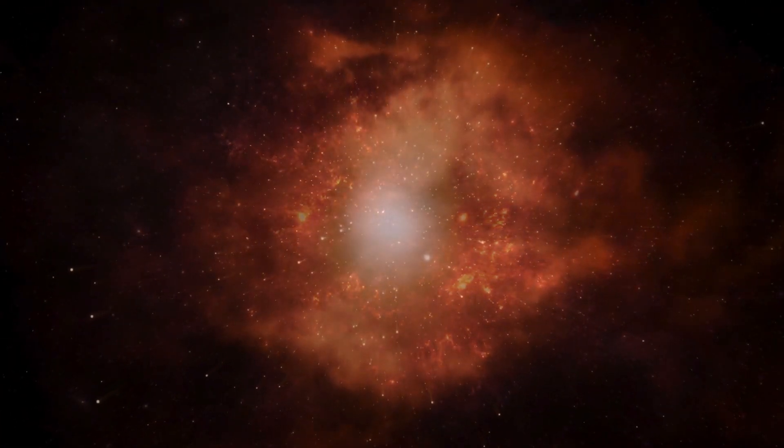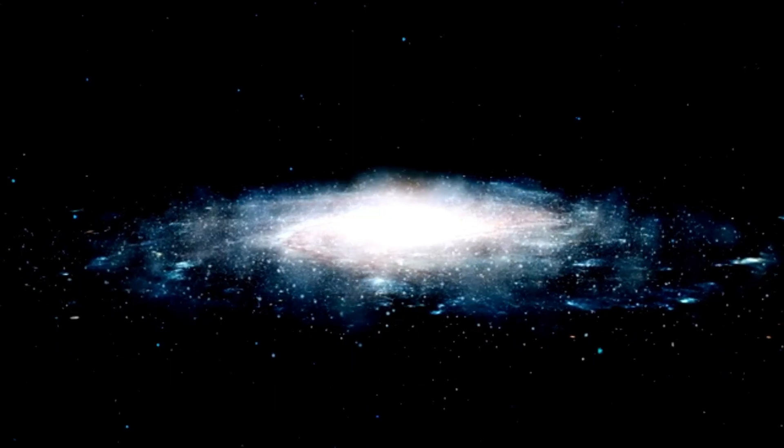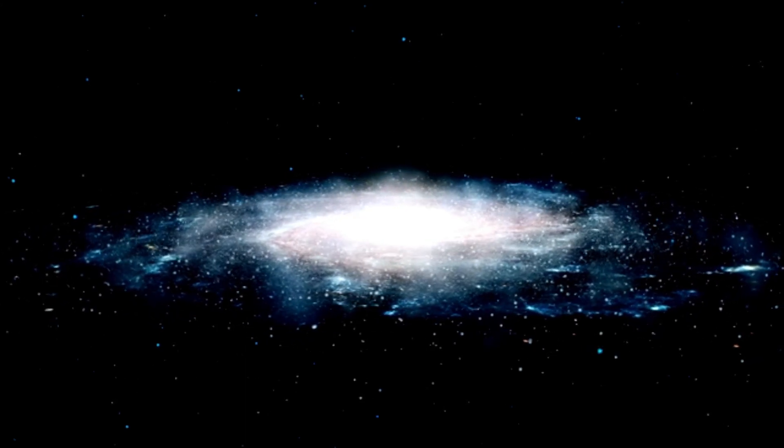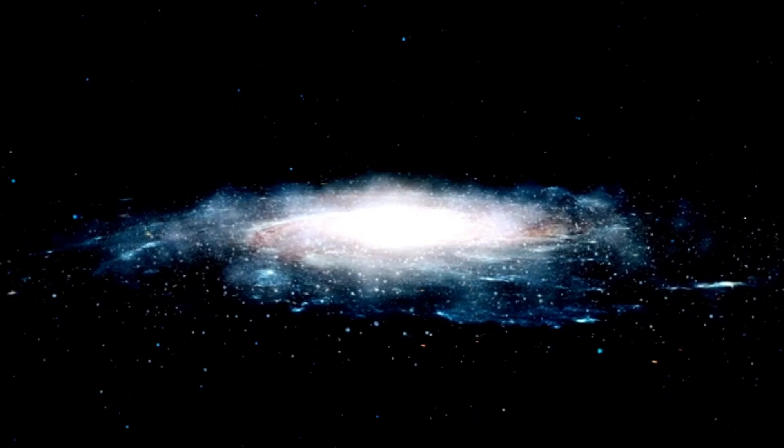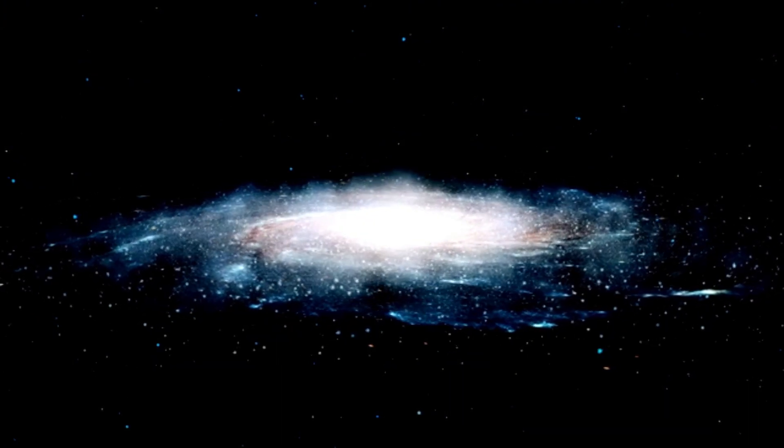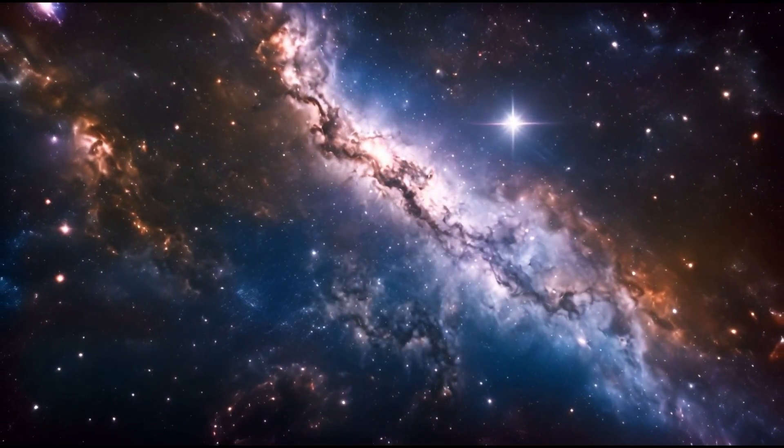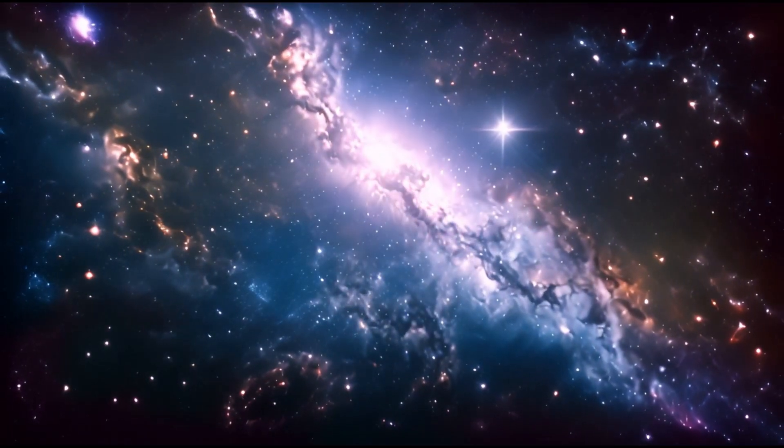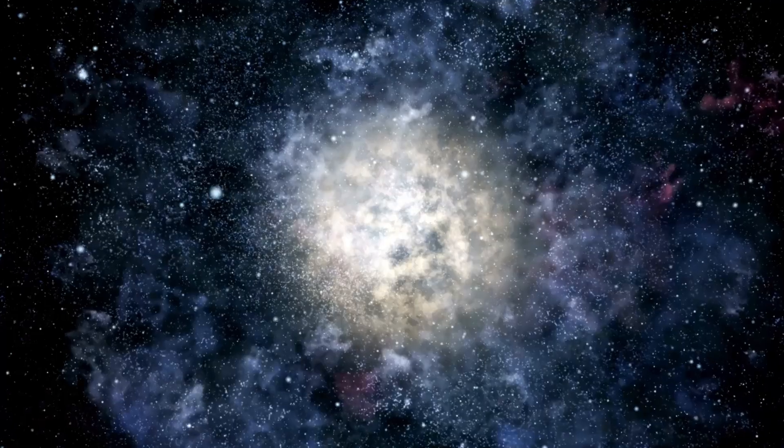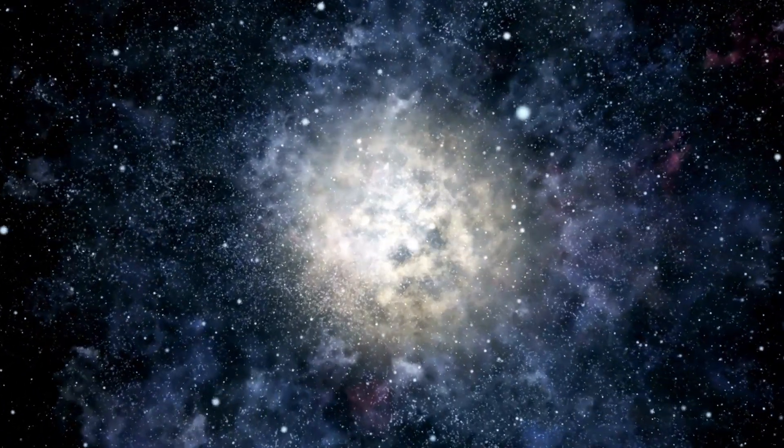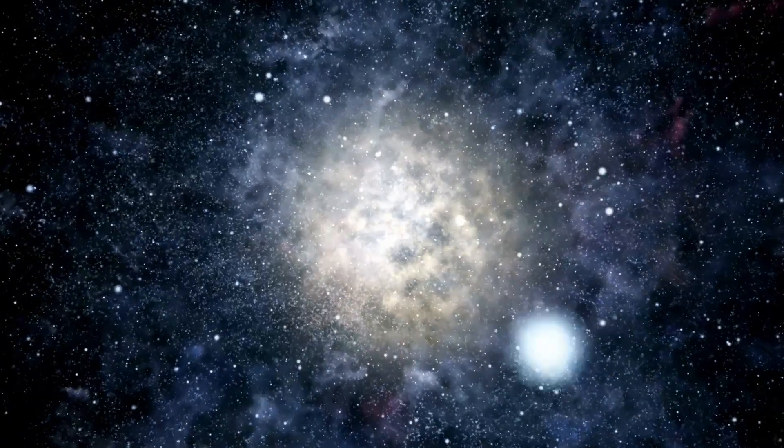When we look up at the starry expanse, there's a subtle paradox we often overlook. This paradox is rooted in the very nature of time and light in our vast cosmos. Stars and celestial bodies are so distant that their light takes a monumental amount of time to reach our eyes. For instance, the speed of light, while being an astounding 186,282 meters per second, still has its constraints.